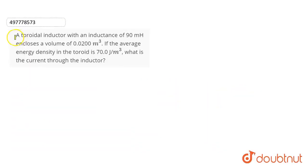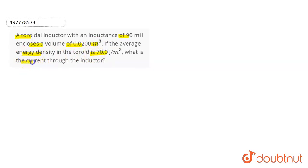In this question, we have given a toroid inductor with an inductance of 90 mH. It encloses a volume of 0.0200 m³. If the average energy density in the toroid is 70.0 joule per m³, what is the current through the inductor?